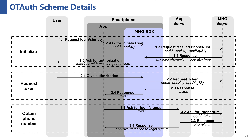Specifically, the app client sends the token to the app server, and the app server forwards this token to the MNO server in exchange for the phone number. After confirming that the app server's IP has been filed and that the token and app ID are valid, the MNO server responds with the local phone number to the app server. Based on this phone number, the app server decides whether to approve the app client's login or signup request.